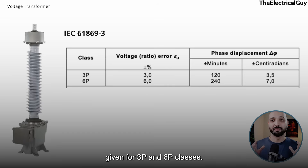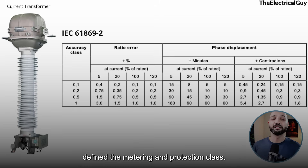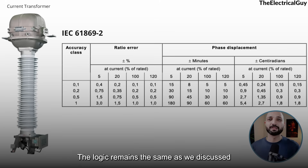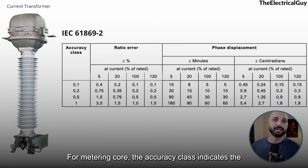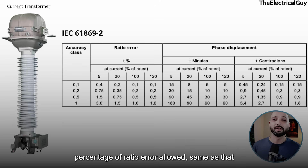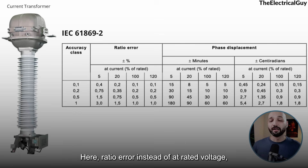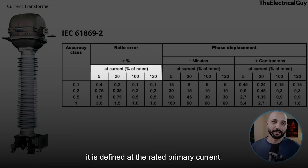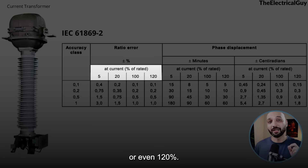Similarly for current transformers, IEC 61869-2 has defined metering and protection classes. The logic remains the same as we discussed for the voltage transformer. For the metering core, the accuracy class indicates the percentage of ratio error allowed — same concept as the voltage transformer. The classes defined by the IEC standard have the ratio error defined not at rated voltage but at the rated primary current, which could be 5%, 20%, 100%, or even 120%.